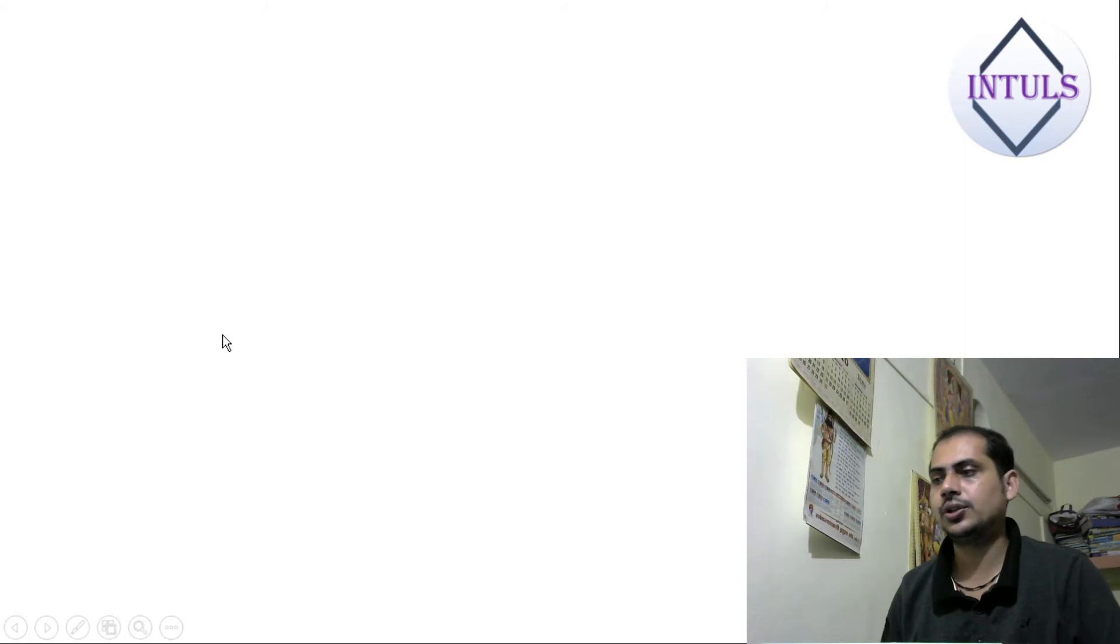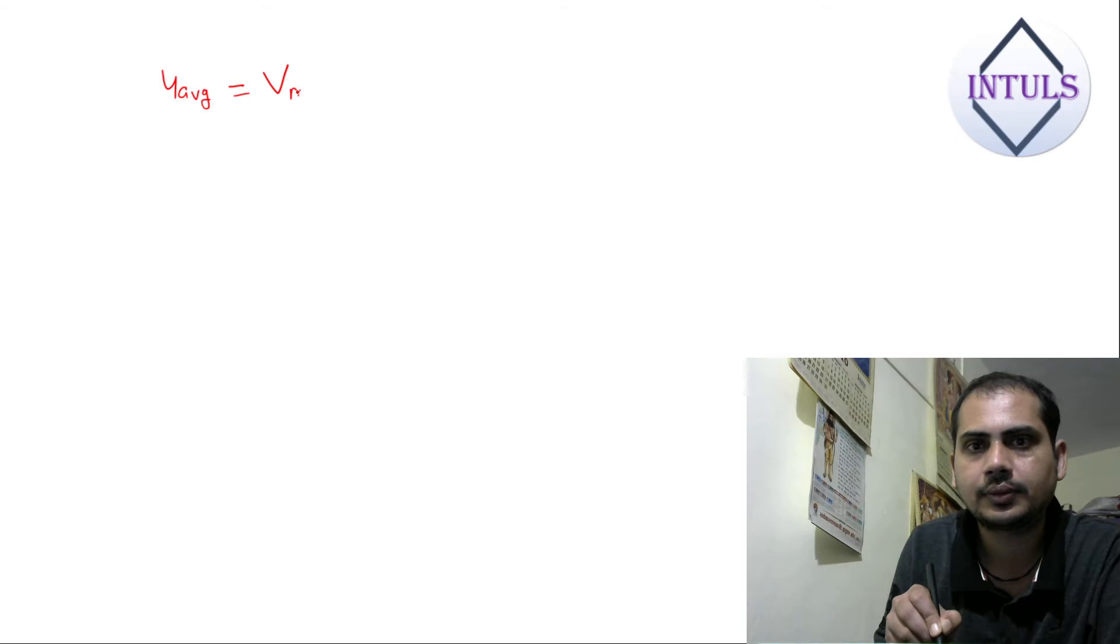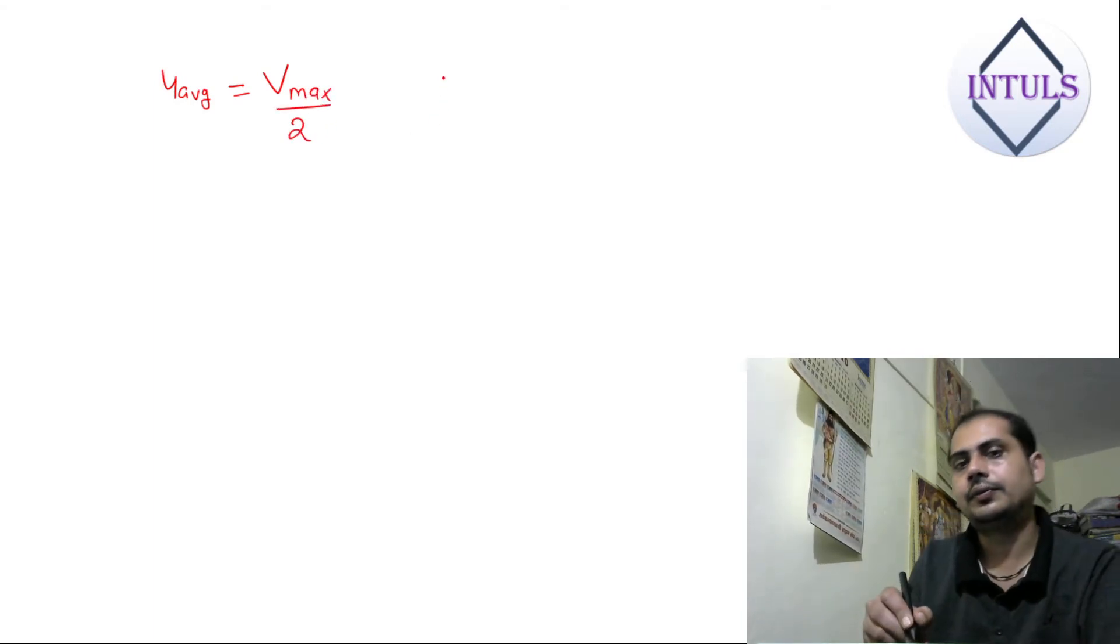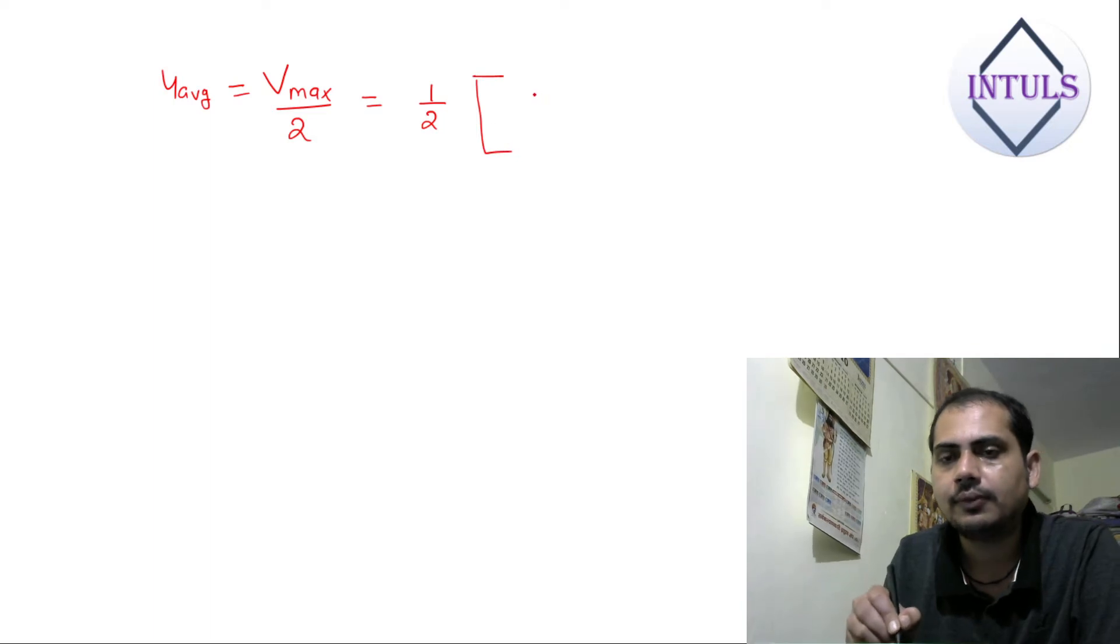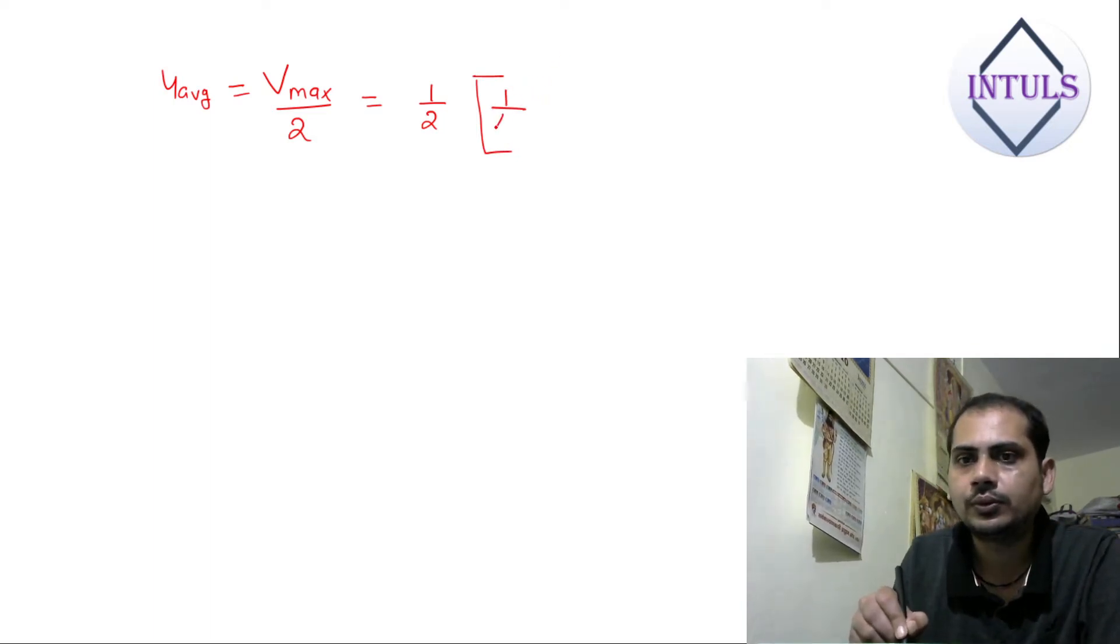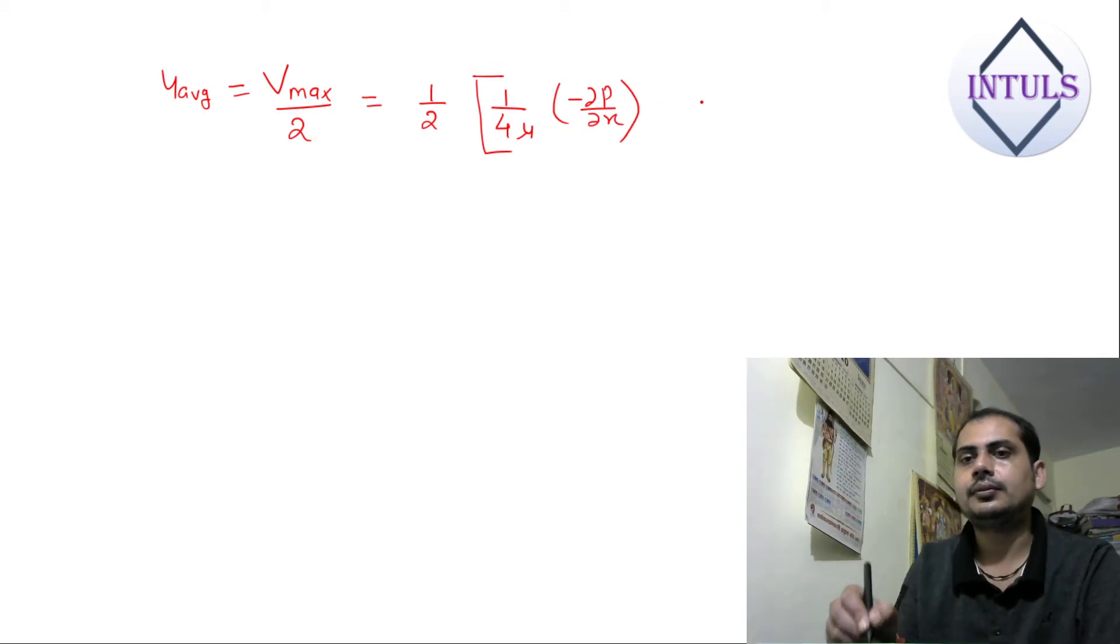So till now we have studied the relation between flow through pipe average velocity and maximum velocity. u_average equals Vmax upon 2, and we studied what is Vmax in flow through the pipe. It is 1 by 2... Vmax is 1 by 4 mu minus del P by del X, R square.